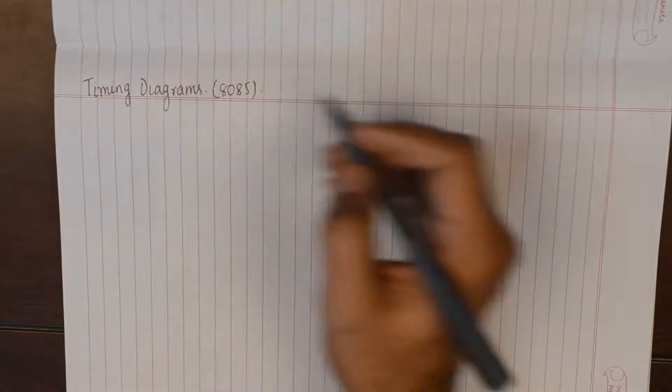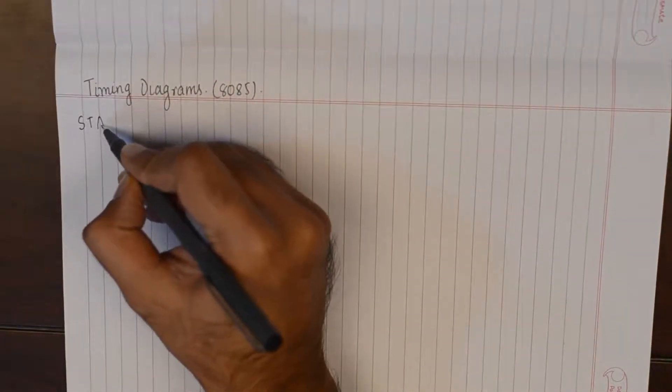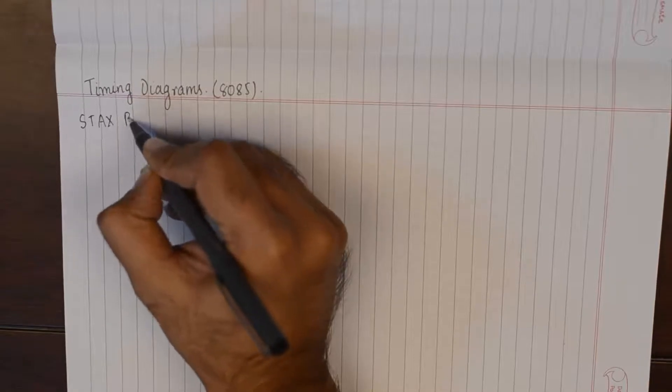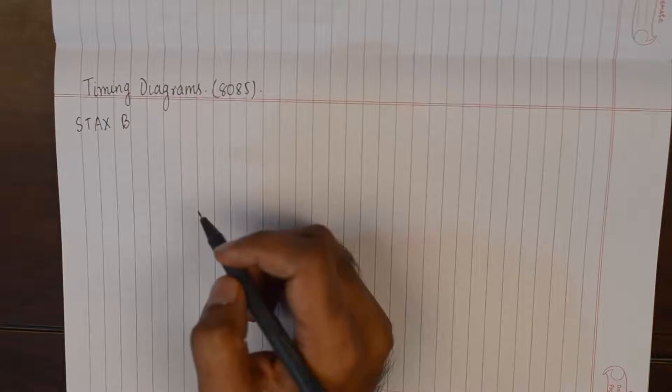Now in this tutorial I want to take up an interesting instruction which is STAX B. In 8085 this instruction is an example of indirect addressing.